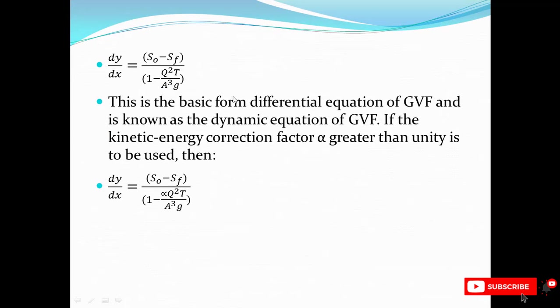The dynamic equation of gradually varied flow is: dy/dx = (S₀ - Sf) / (1 - Q²T / gA³), where S₀ is the bed slope, Sf is the friction slope, Q is the discharge, T is the top width, A is the area, and g is gravitational acceleration. If the kinetic energy correction factor alpha is greater than 1, it can be incorporated into the equation to calculate the change in water surface with respect to x.